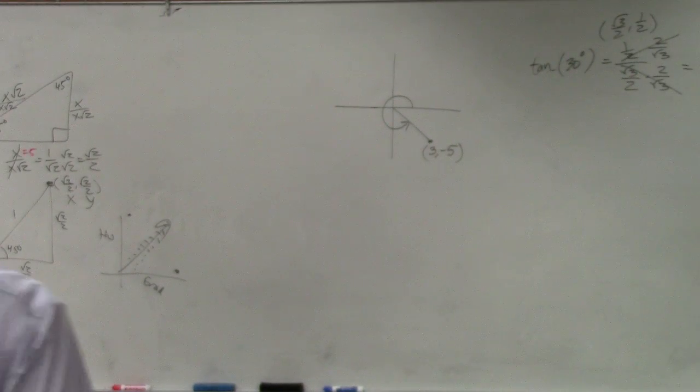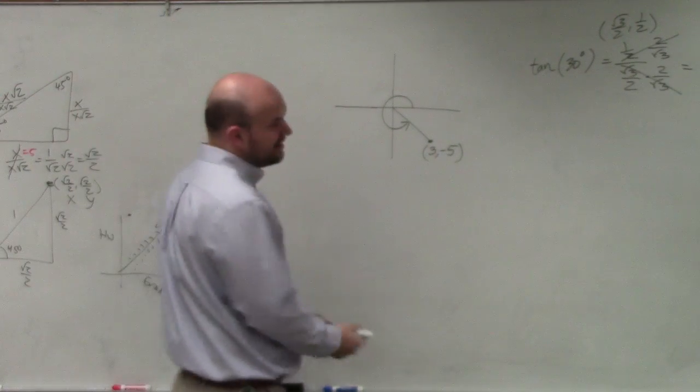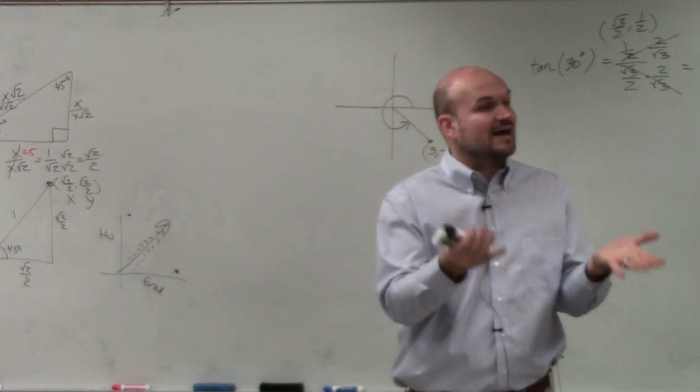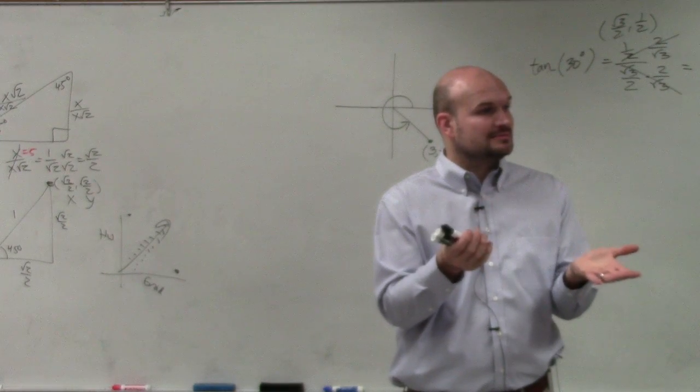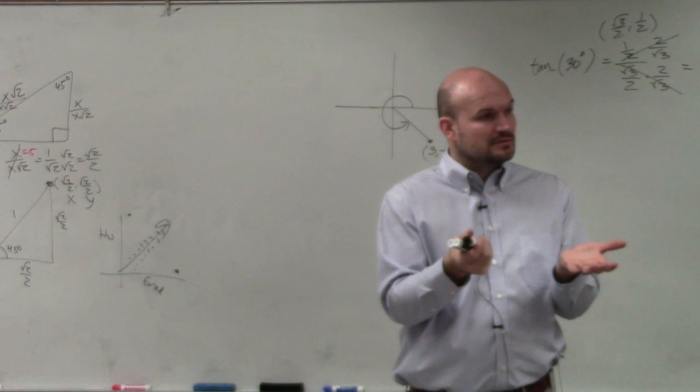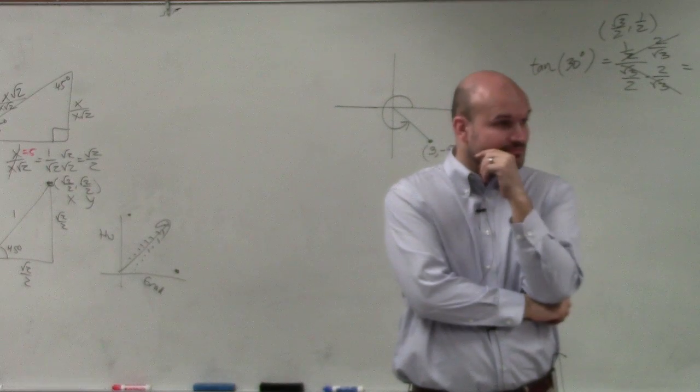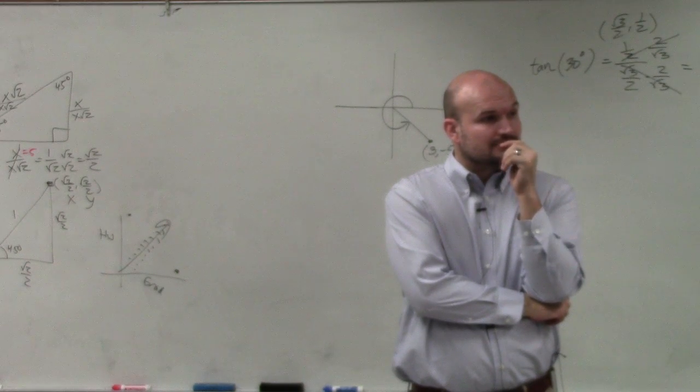phone when they don't want me to call on them. But instead of doing that, I'll pick on Jonathan. Jonathan, to evaluate your six trigonometric functions, you have to have a what? It starts with a T. It's a shape. A triangle.